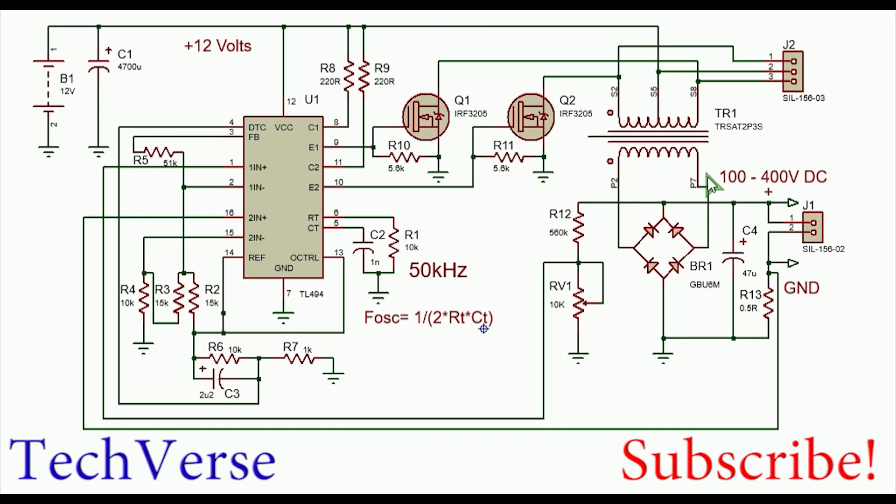The way this works is first there's a soft start by this circuit here. This ensures that the output pulse width modulation increases gradually from zero to about 95 percent, so as to reduce the stress on the power MOSFETs when the inverter is powered on.